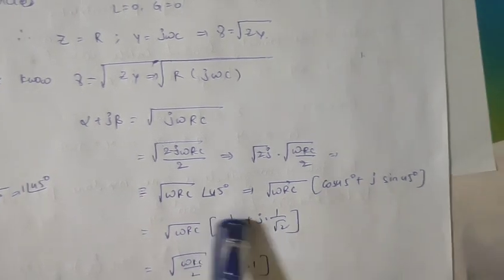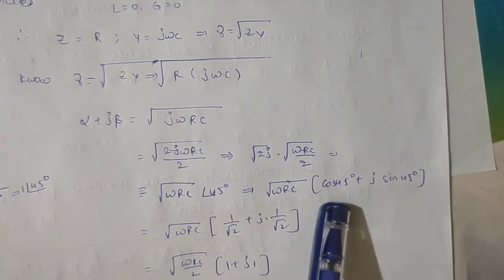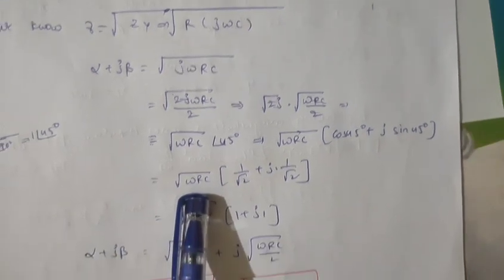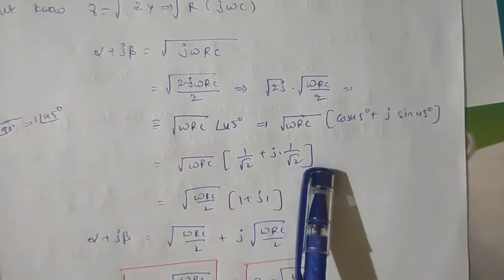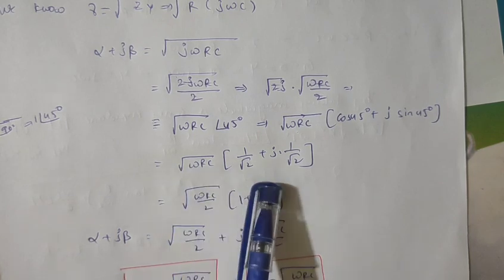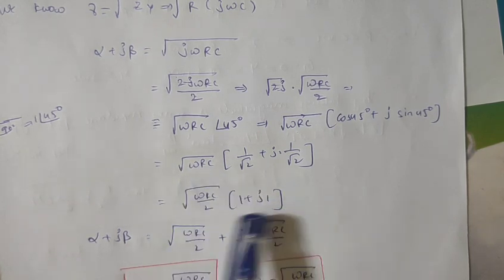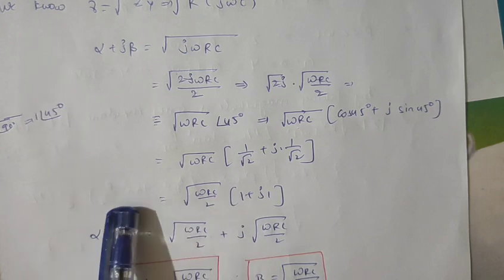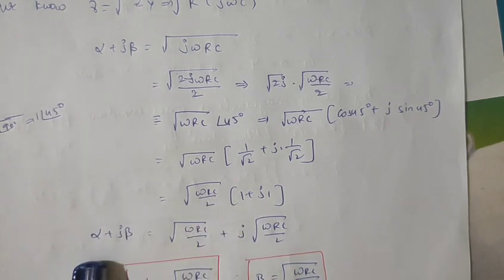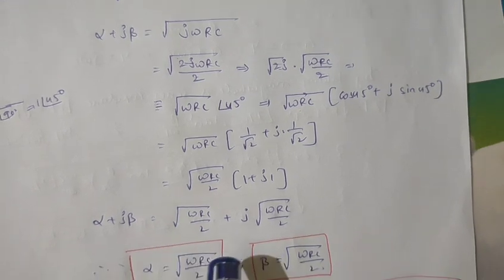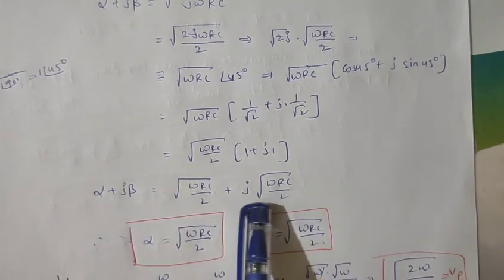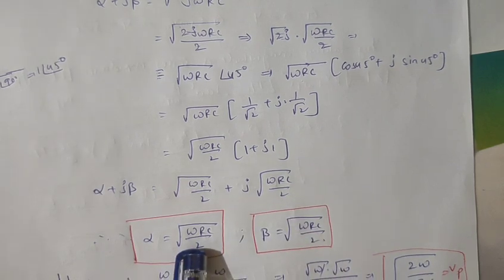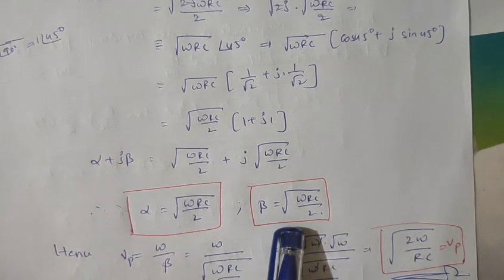Writing 45 degrees as cos45° + j·sin45°, we know cos45° = 1/√2 and sin45° = 1/√2. Multiplying the ωRC term with 1/√2, and taking the whole term common, we get √(ωRC/2) × (1 + j). By comparing real and imaginary values, we get α = √(ωRC/2). Similarly, β = √(ωRC/2). So alpha depends upon the frequency: α = √(ωRC/2) and β = √(ωRC/2).